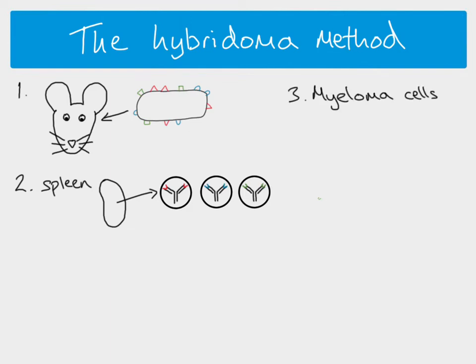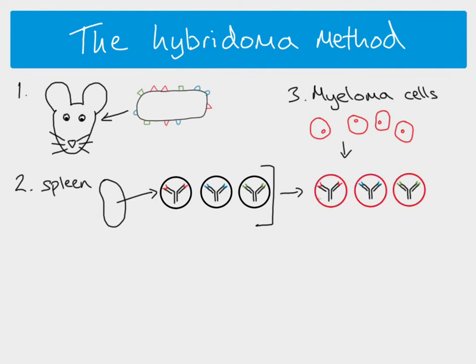Then we take something called a myeloma cell, which is a particular kind of cancer cell. Cancer cells can divide indefinitely — they're a bit like stem cells in that respect. So what scientists do is take the plasma cells and fuse them with the myeloma cells. What we have now are cells called hybridoma cells. These cells are able to divide, which plasma cells normally can't do, and they produce the antibody that the plasma cell would have produced. So we have our infinitely dividing plasma cells.